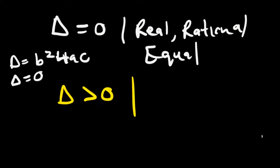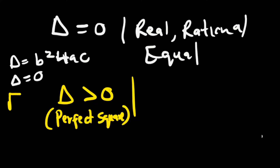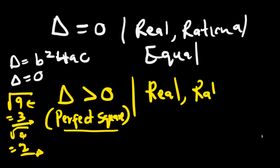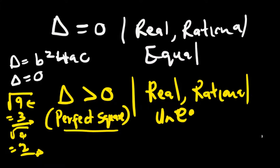Now if the discriminant is greater than zero, it depends on whether it's a perfect square. A perfect square is something like the square root of nine giving you three, or the square root of four giving you two — numbers without decimals. If the discriminant is greater than zero and is a perfect square, the roots are real, rational, and unequal.